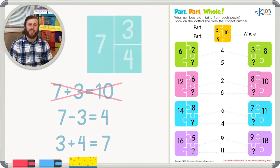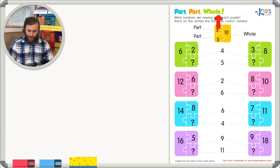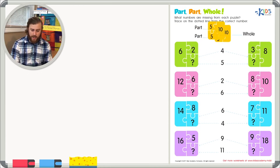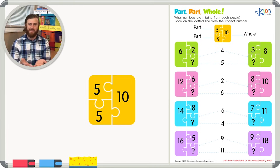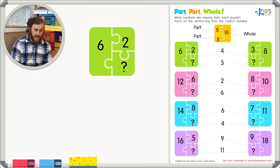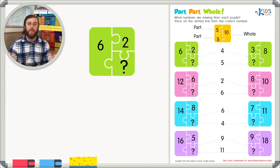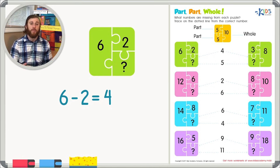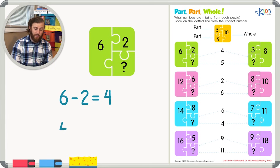Let's read the directions: Part, Part, Whole — what numbers are missing from each puzzle? Trace on the dotted line from each correct number. We have the example of five, five, and ten, because five plus five is ten. For our first example, we have six as our whole number and two as one part. We'll use subtraction: six minus two equals four. To confirm, we add four plus two and get six. So let's go ahead and trace our way to the four.